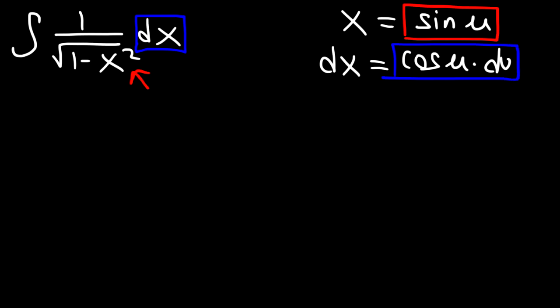And so we're gonna have the integral of 1 over the square root of 1 minus sine squared and then times cosine u du. Now you need to be familiar with a very common pythagorean identity in trigonometry.